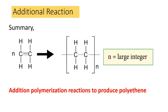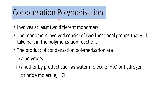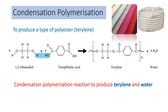Now the second type: condensation polymerization involves at least two different monomers. The monomers involved each have two functional groups that take part in the reaction. The products are a polymer and a byproduct — either water molecules or hydrogen chloride molecules.